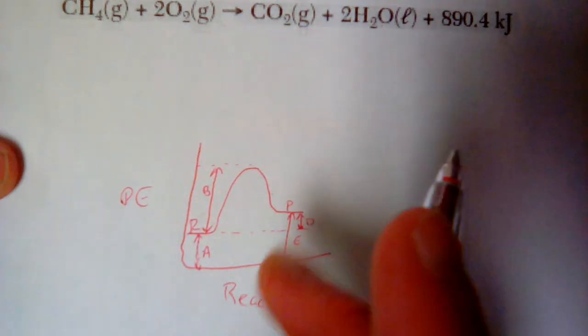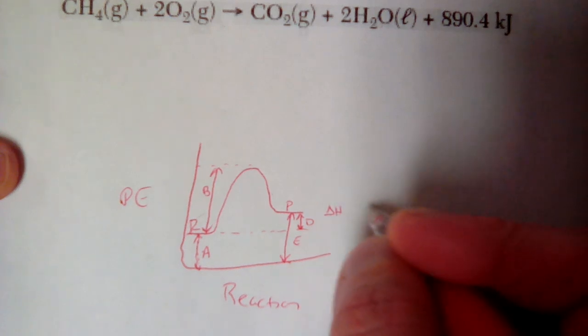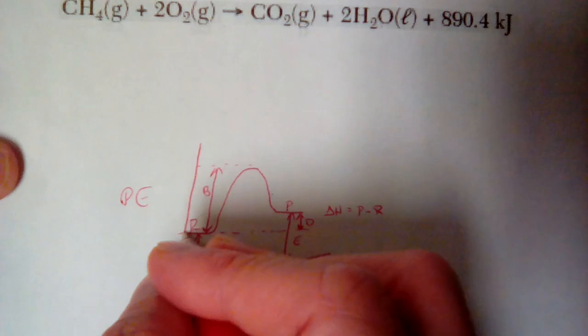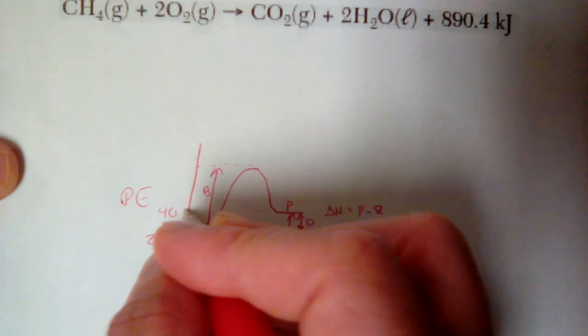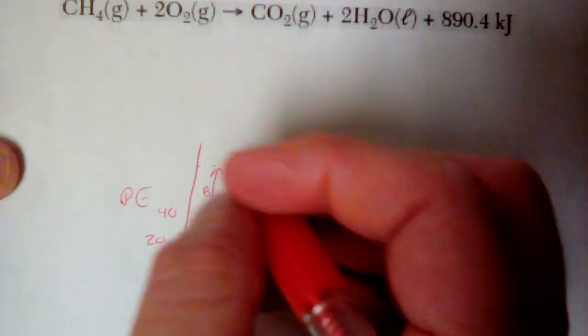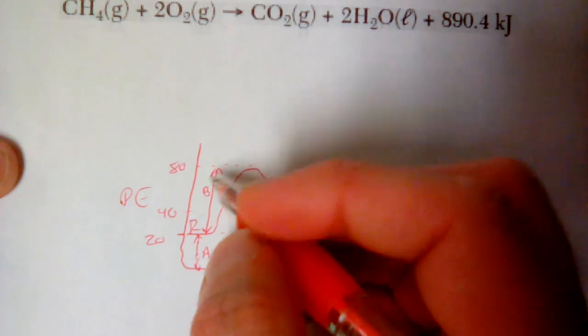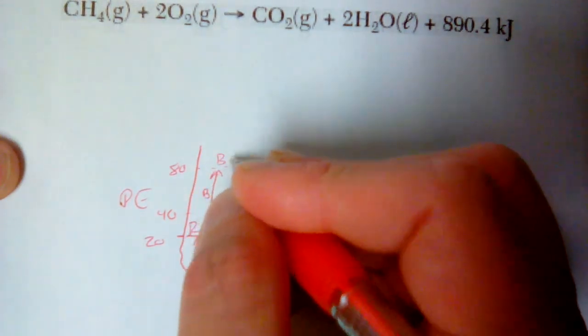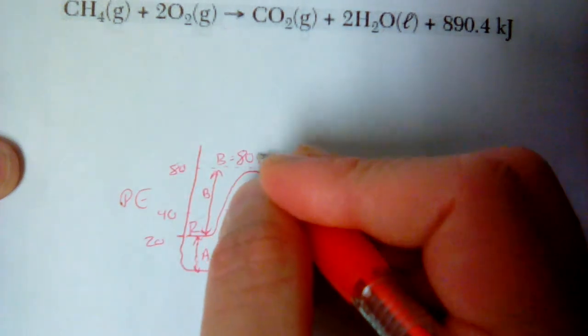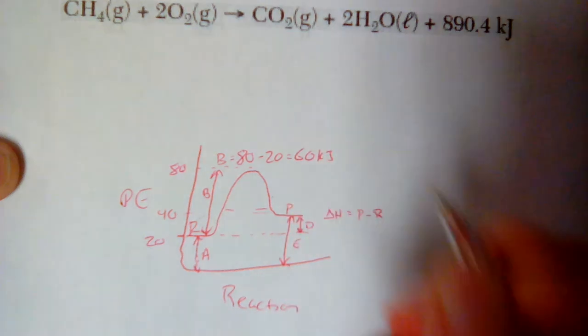The other thing that you'll notice is when you go to do your delta H, it is still P minus R. And so let's say this is at 20, and let's say this is at 40, and for fun, let's say this is at 80. I still find this the same way. My activation energy is still the big number, the peak, minus where my reactants are. My activation energy in this case would be 60 kilojoules.